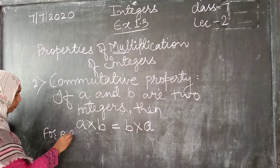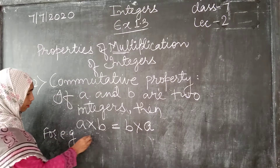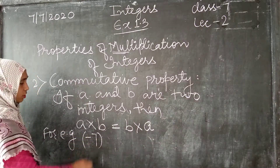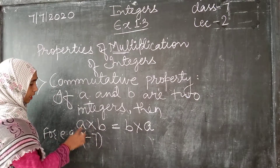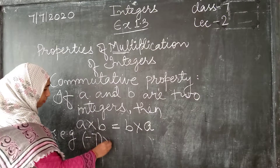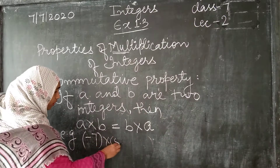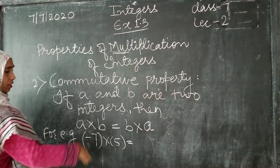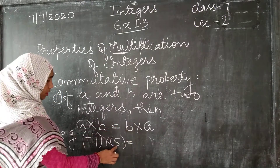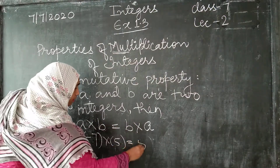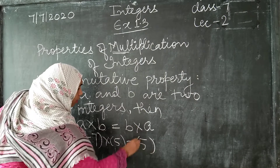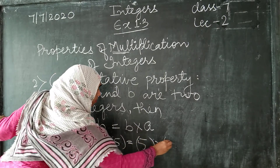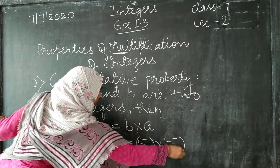Let's take an example. Suppose A is minus 7 — that's one integer — and B is 5. So we put minus 7 in place of A and 5 in place of B.